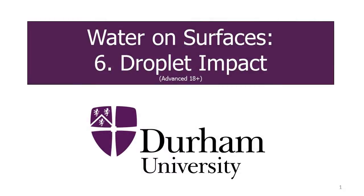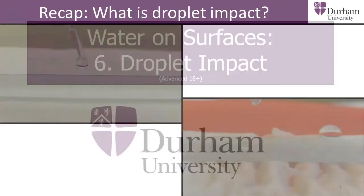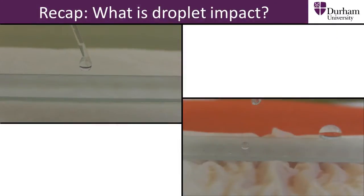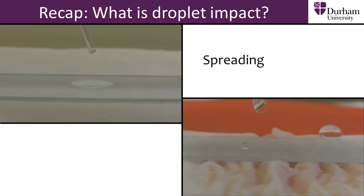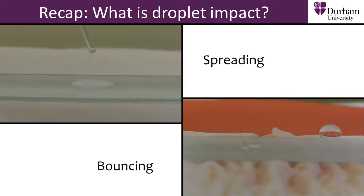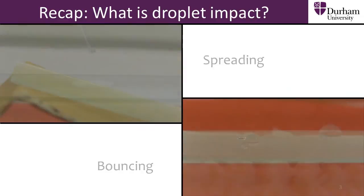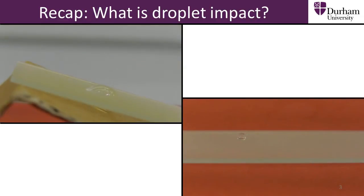In the previous part of the section we saw that there are many ways for a droplet to react upon impact with a surface. We broadly connected the behaviours of bouncing to superhydrophobic surfaces, pinning to hydrophobic surfaces, and spreading for hydrophilic surfaces.